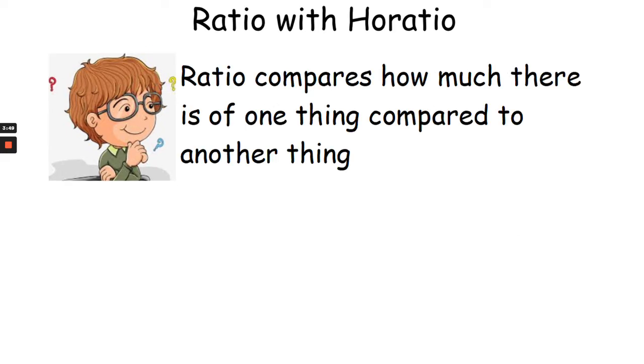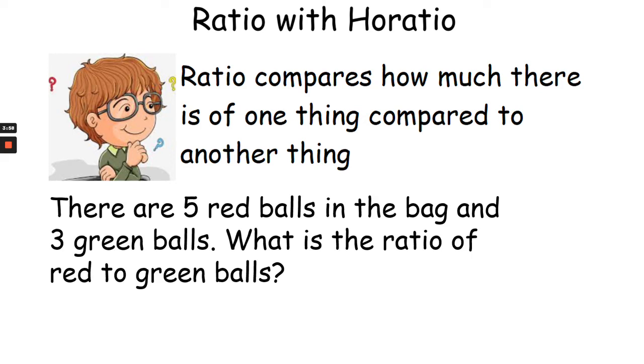So let's have a go at one on our own. Ratio compares how much there is of one thing compared to another thing. There are 5 red balls in the bag and 3 green balls. What is the ratio of red to green balls? Notice in the question the order red to green. That's important. So pause your video and write the ratio. Alright, let's see how we got on. We should have written the ratio 5 to 3. 5 red balls to 3 green balls with the colon in the middle to show we're showing ratio. Well done if you got that one.